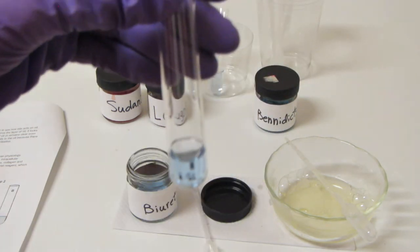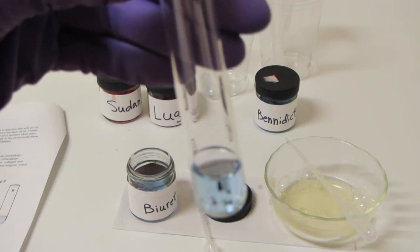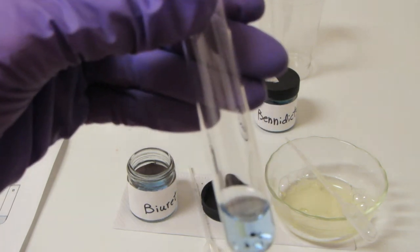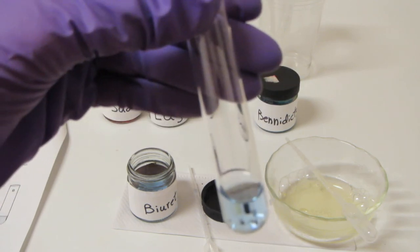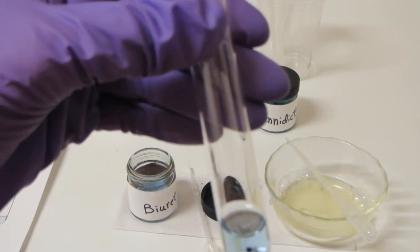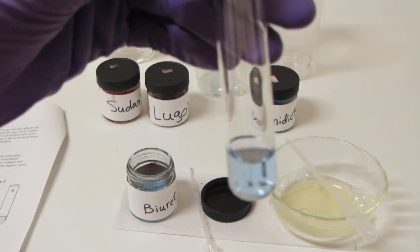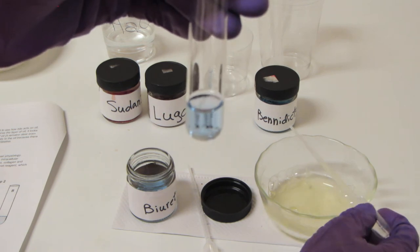So the easiest way to add protein to the solution is to use a protein which is already in liquid form. Easiest one I can think of to get my hands on is egg white. Remember, egg white is mostly a liquid protein called albumin. So let's go ahead and take some egg white. I cracked an egg earlier. That's what's in this container here.